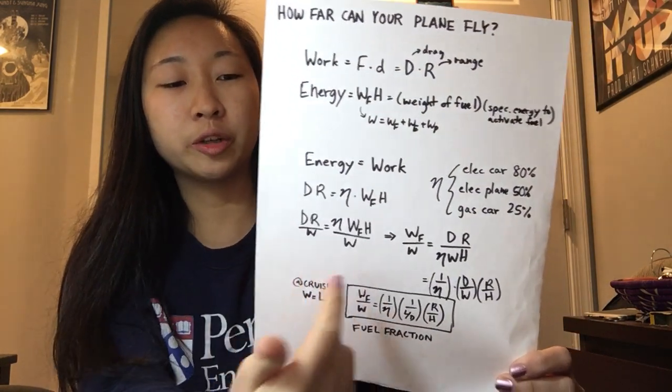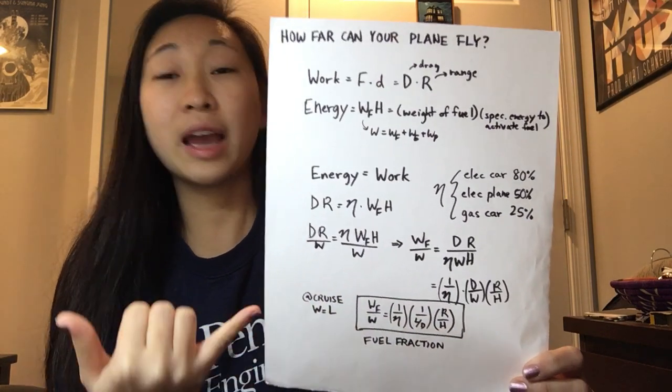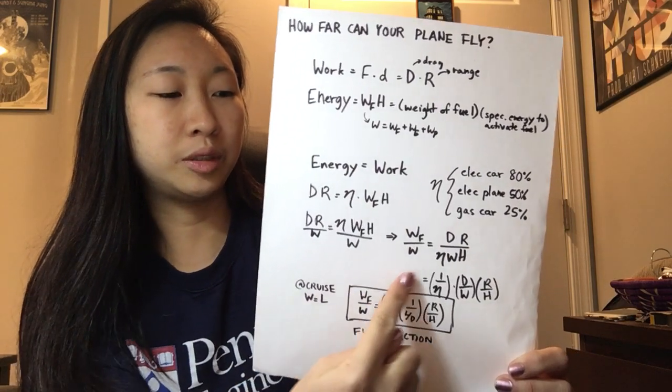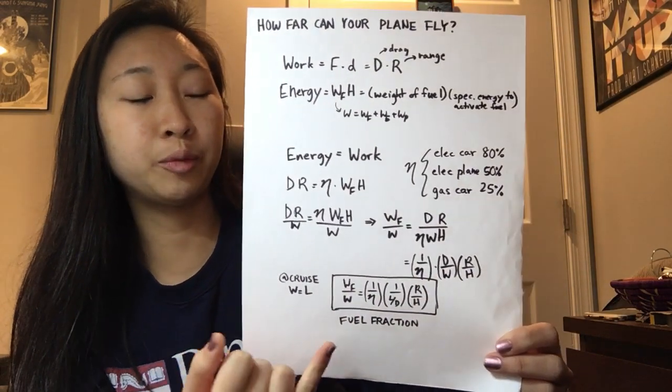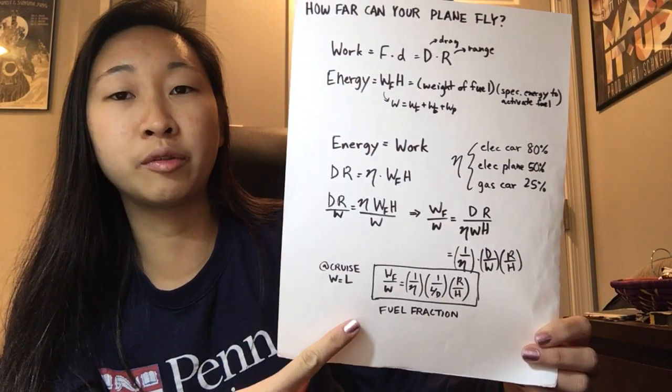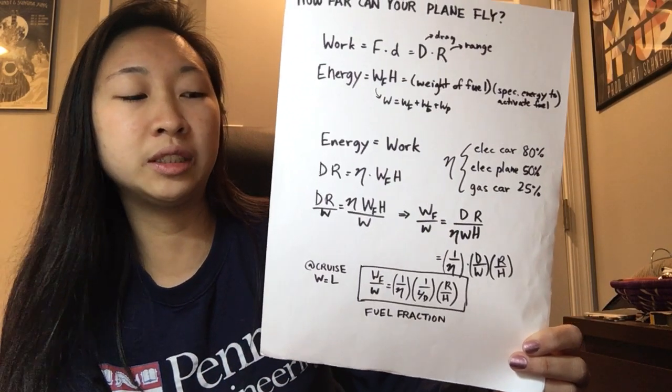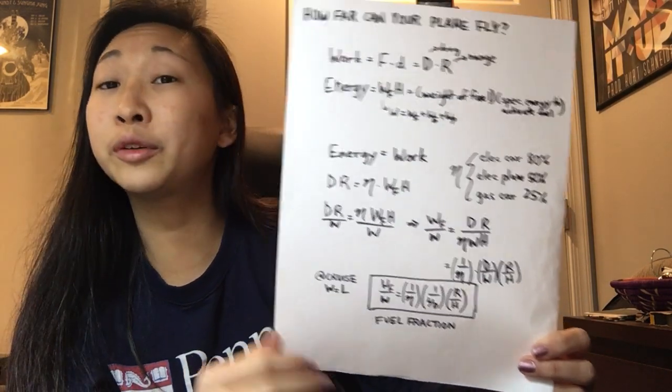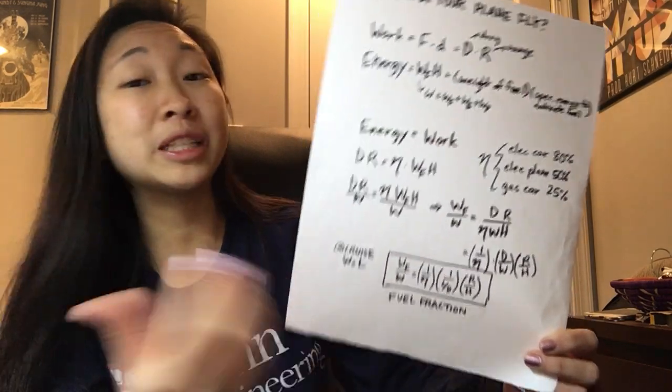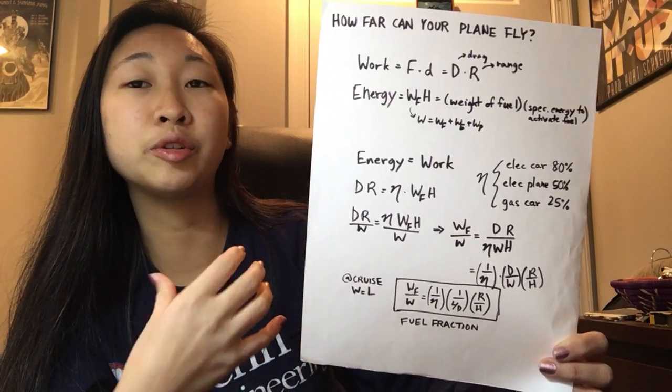So you can divide energy and work and divide both sides by the takeoff weight. Rearrange a little bit. Know that at cruise, your weight equals lift. So rearranging, and you end up with this fuel fraction, which is the weight of your fuel over the takeoff weight, which includes the fuel weight, is equal to one over the efficiency, one over the lift over drag ratio, and then range over the specific energy. So basically, if you have these numbers, you can estimate the distance of your aircraft.